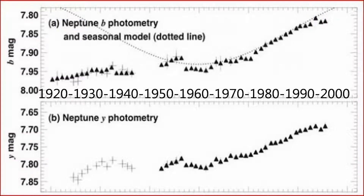Here we have a graph of photometry taken between 1920 and 2000 of the magnitude of Neptune at two different wavelengths. You can see that the magnitude has brightened, starting off at about a magnitude of 8 and going up to a magnitude of 7.8. It keeps going like this — it will be visible to the naked eye.